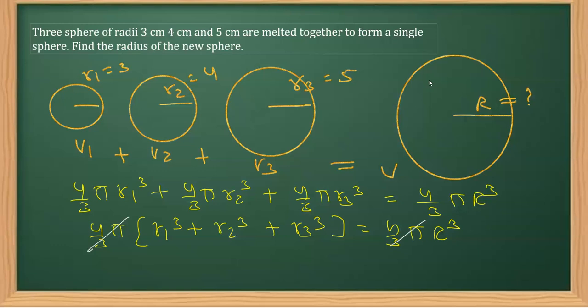So now we can place the values. I'm replacing r1 with 3, so 3³ is 27. r2 which is 4, so 4³ is 64. r3 which is 5, so 5³ is 125, and that is equal to R³. Now the sum of these is 216, which is equal to R³. That implies R is 6, because the cube of 6 is 216.